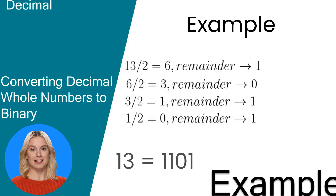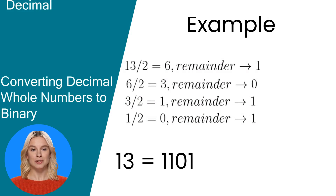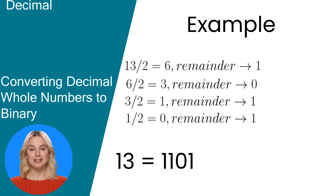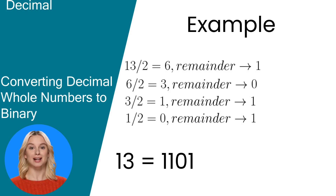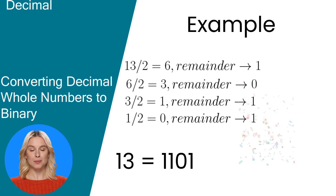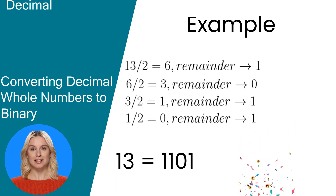For this example, we have the decimal number 13 and want to convert it to binary. When dividing 13 by 2, the quotient is 6. Since the result of the division is not even, we write down the remainder 1 and continue with the integer part of the quotient 6, repeating the process until we arrive at 1. The reverse order of the remainders is 1101, and that's your binary number.